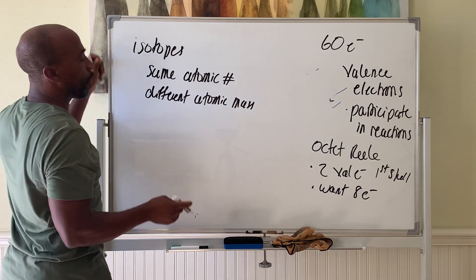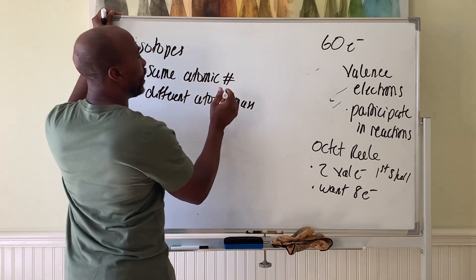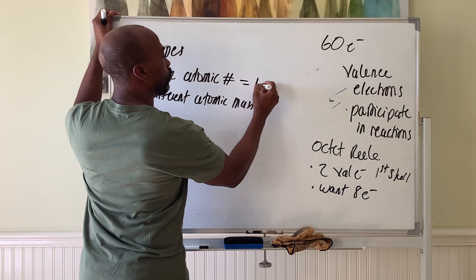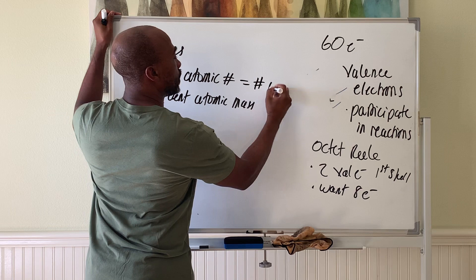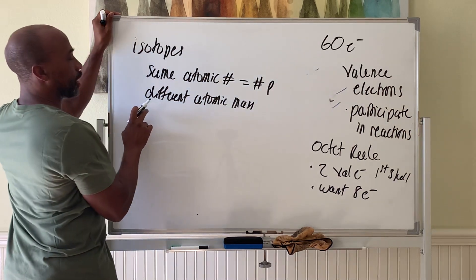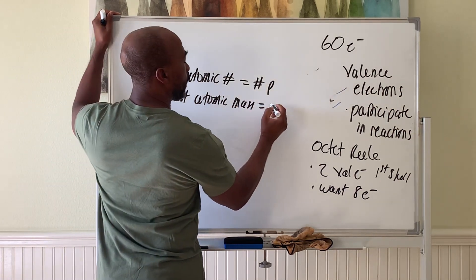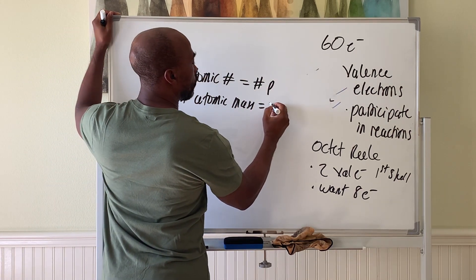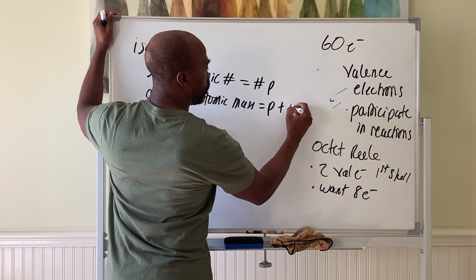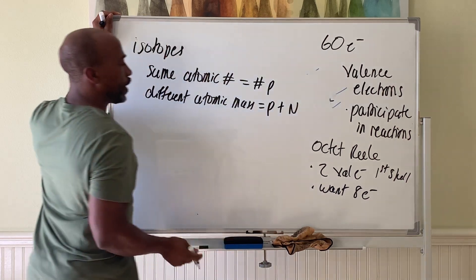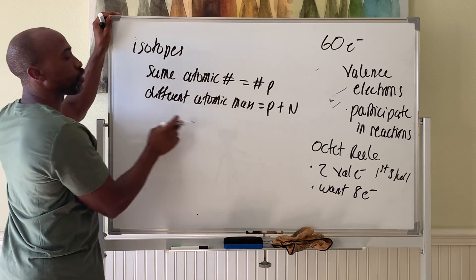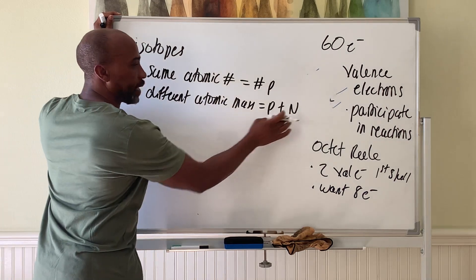The atomic number of any element is equal to the number of protons. The atomic mass is equal to the number of protons plus the number of neutrons. And so isotopes have different numbers of neutrons, basically.